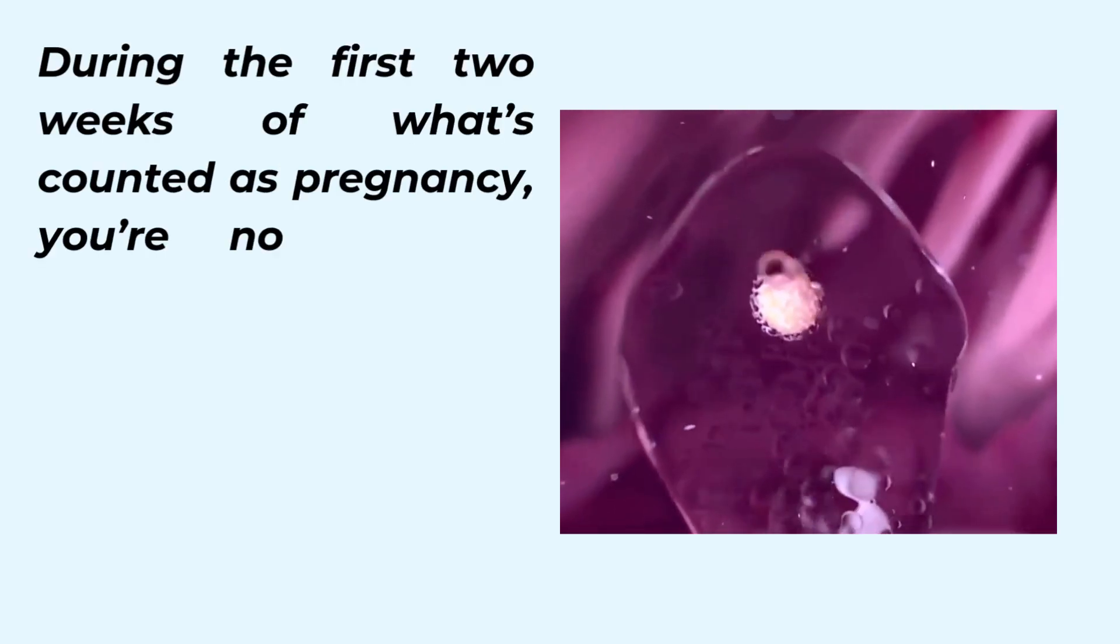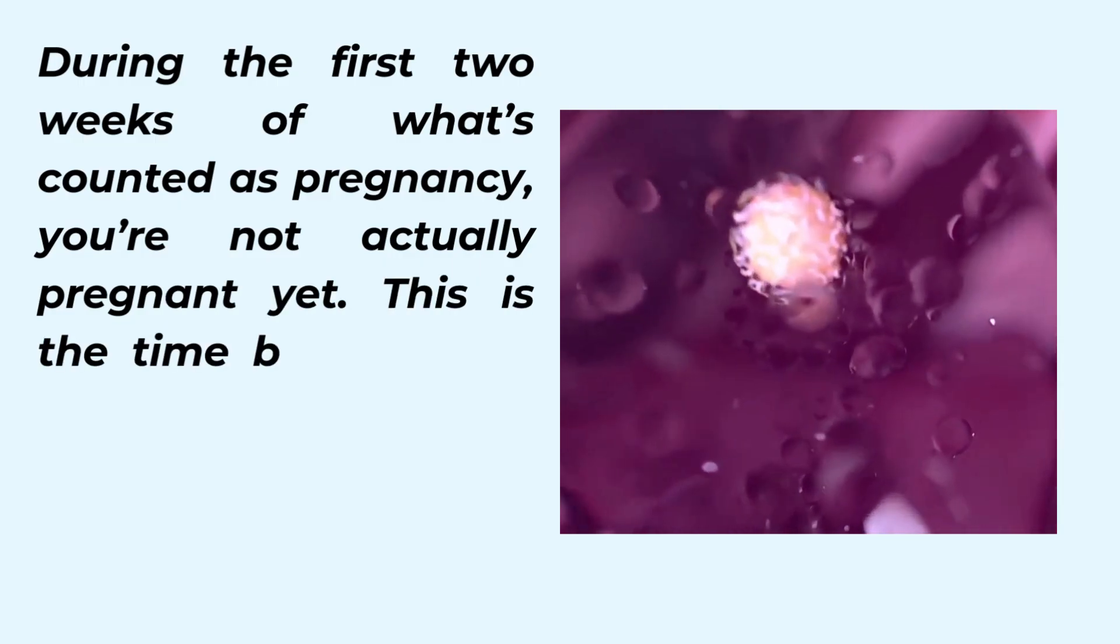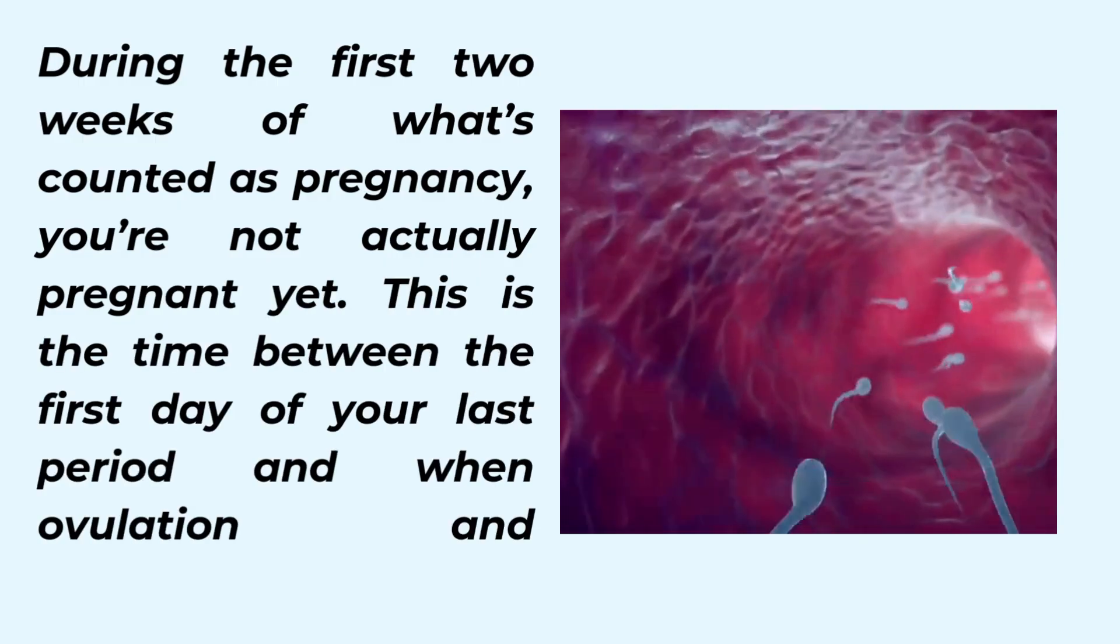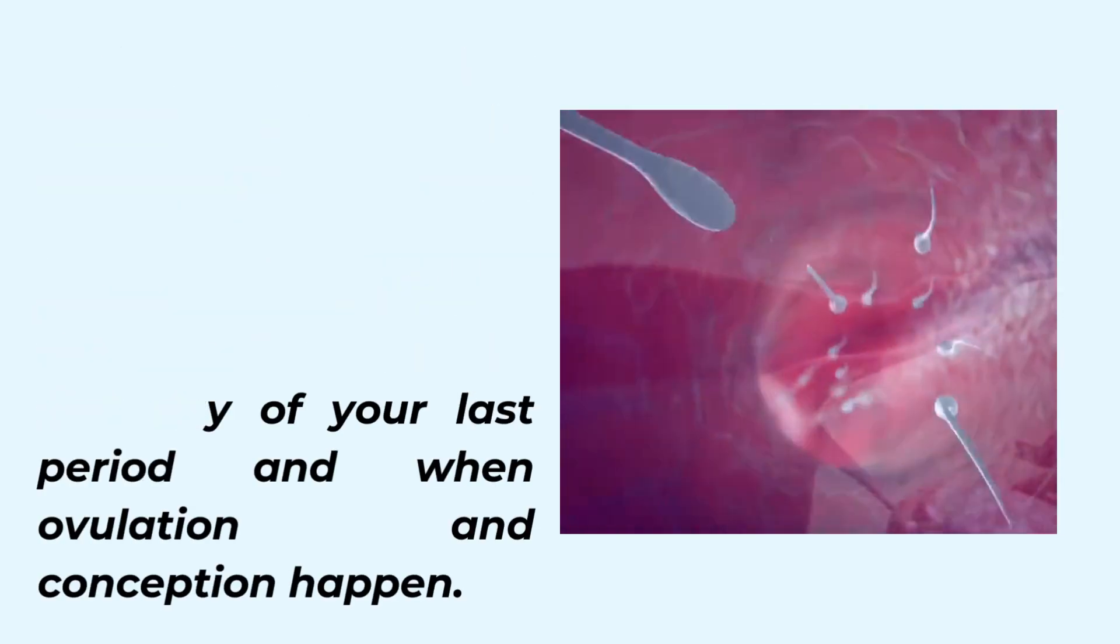During the first two weeks of what's counted as pregnancy, you're not actually pregnant yet. This is the time between the first day of your last period and when ovulation and conception happen.